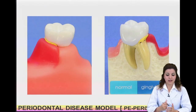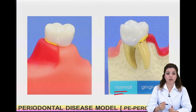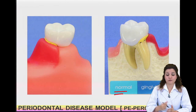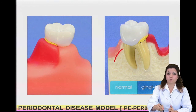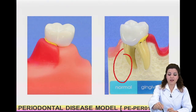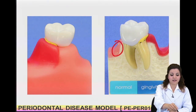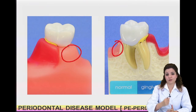For instance, in the healthy state you can mention that the tooth is firmly supported by the alveolar bone and the healthy gingiva is tight against the tooth.